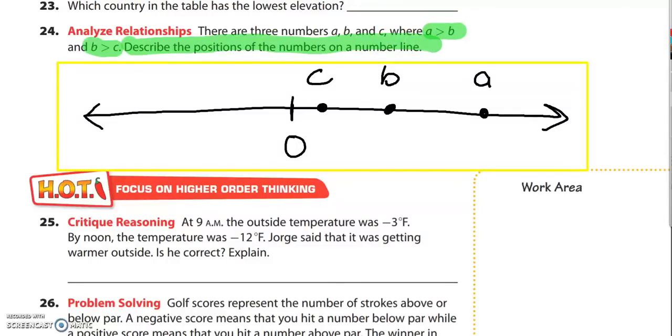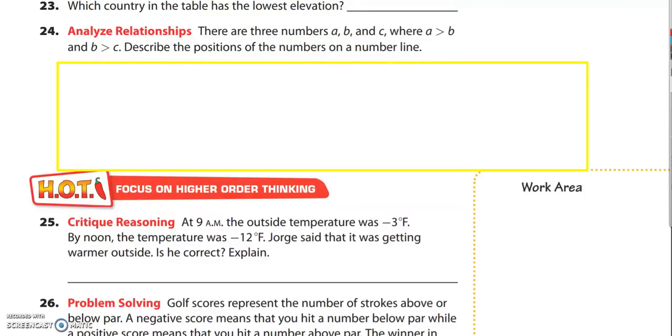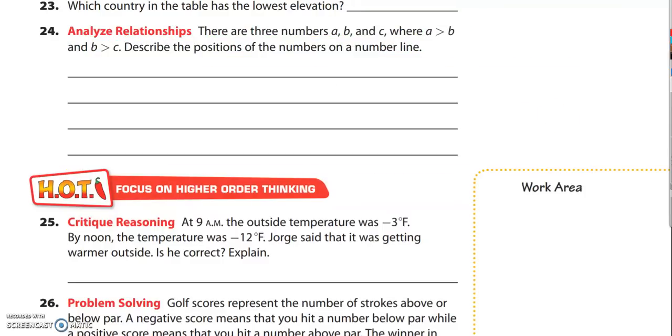So simply what I'm going to put, I'll type this in in just a minute, is I'm going to say that a is greater than b and b is greater than c. That's all I'm going to write because that describes their positions. So I'll type that in. Make sure you can see a good answer.